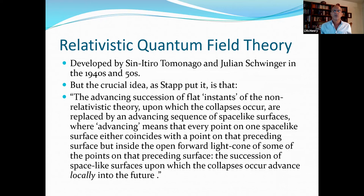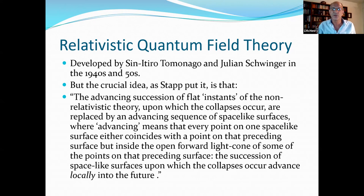In other words, that which was fundamental to Newtonian physics, an instantaneous cosmic now, has to be rejected. This was developed by Tomonaga and Schwinger in the 1940s and 50s. The crucial idea, according to Stapp, is that the advancing succession of flat instants in the non-relativistic theory upon which the collapse occurs are replaced by advancing sequences of space-like surfaces where advancing means at every point on the space-like surface either coincides with a point on that preceding surface, but inside the open forward light cone of some of the points of the preceding surface. The succession of space-like surfaces on which the collapse occurs advances locally into the future.